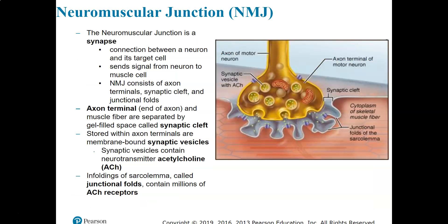At the neuromuscular junction, this is what we call a synapse — a connection between a neuron and its target cell, which in this case is the muscle cell. This allows us to send the signal from the neuron to the muscle cell through the release of the neurotransmitter acetylcholine into a tiny space called the synaptic cleft. We have axon terminals, which are the widened, flattened ends of the axons, separated from the muscle fiber by just this tiny synaptic cleft.